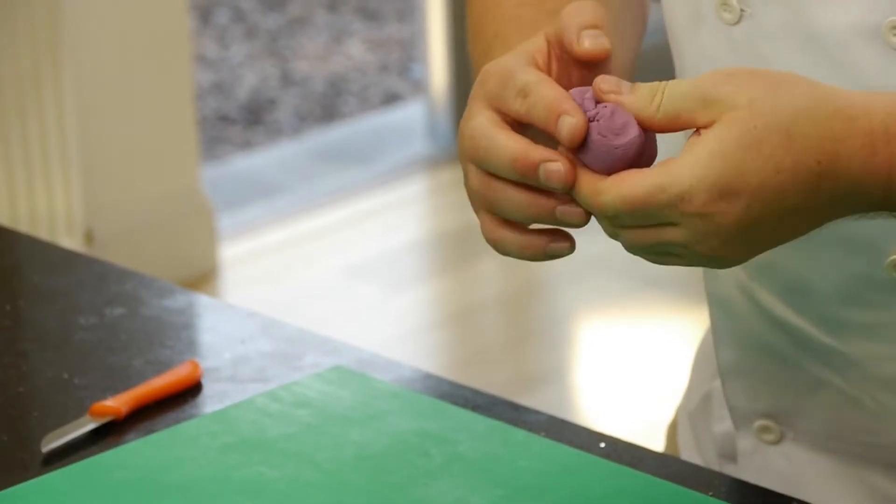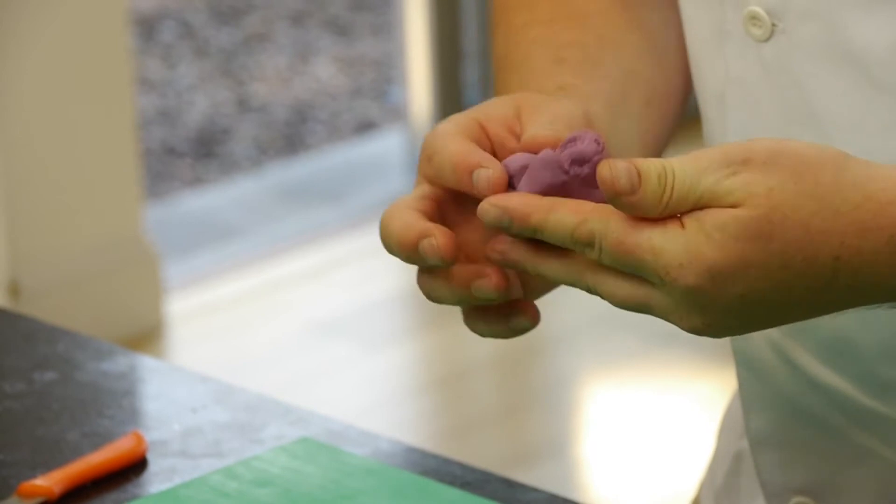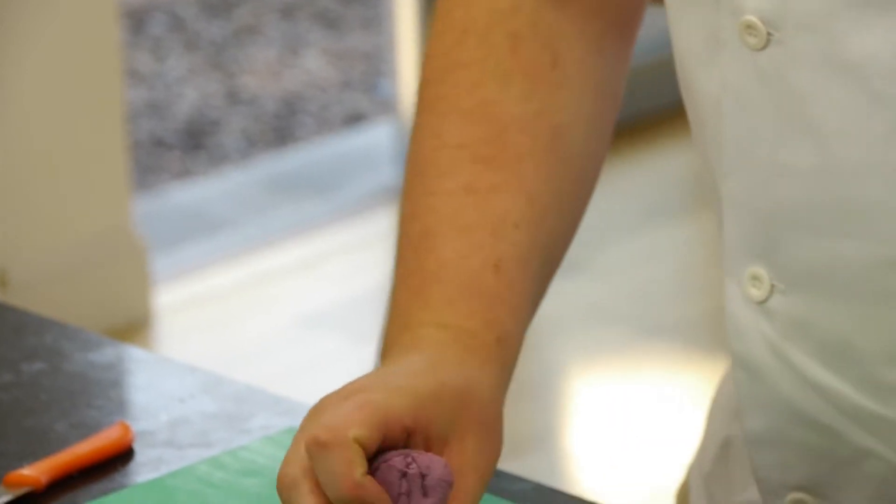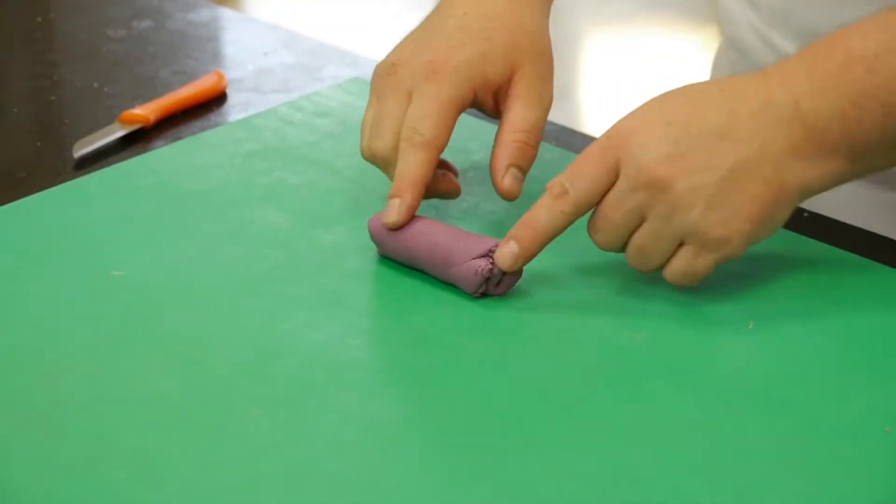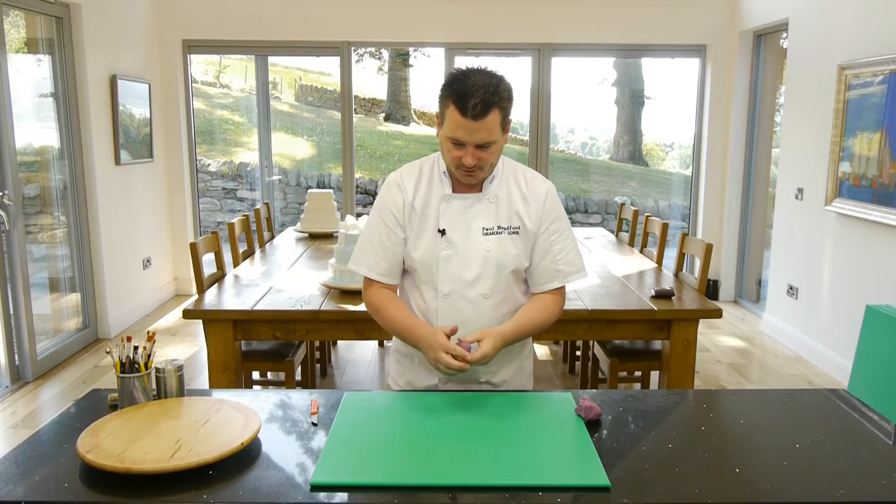Now again you can see the cracks, so you always want to get rid of the cracks first, so just work that. Because quite often people just start to roll it out and they'll end up with the paste all crackly and horrible. So you just want to make sure you soften it up first.